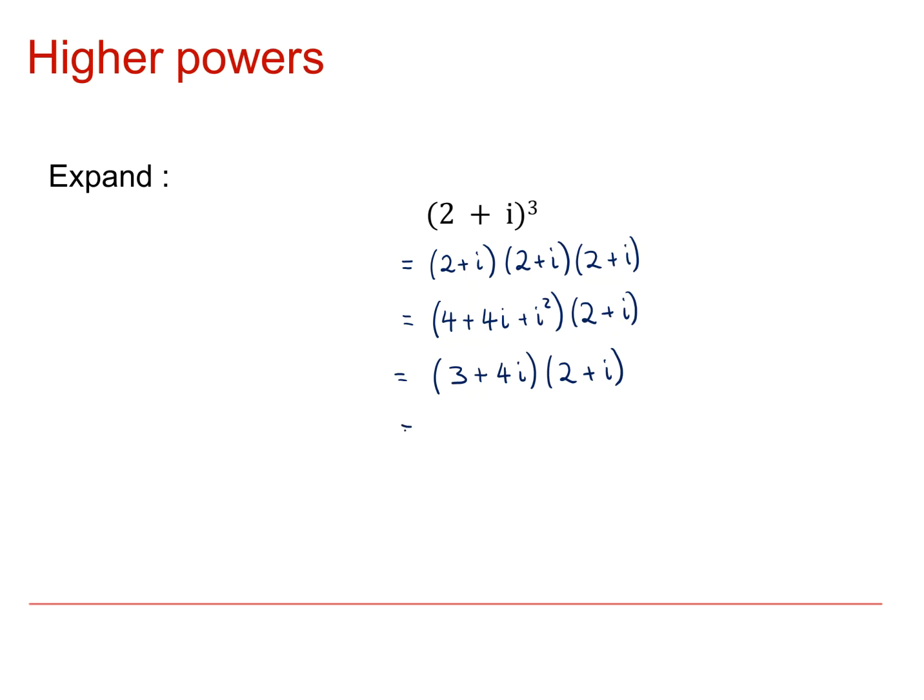Multiplying out these brackets gives us 6 plus 3i plus 8i plus 4i squared. The 4i squared is minus 4, so that's 6 minus 4 plus 3i plus 8i, which is 2 plus 11i.